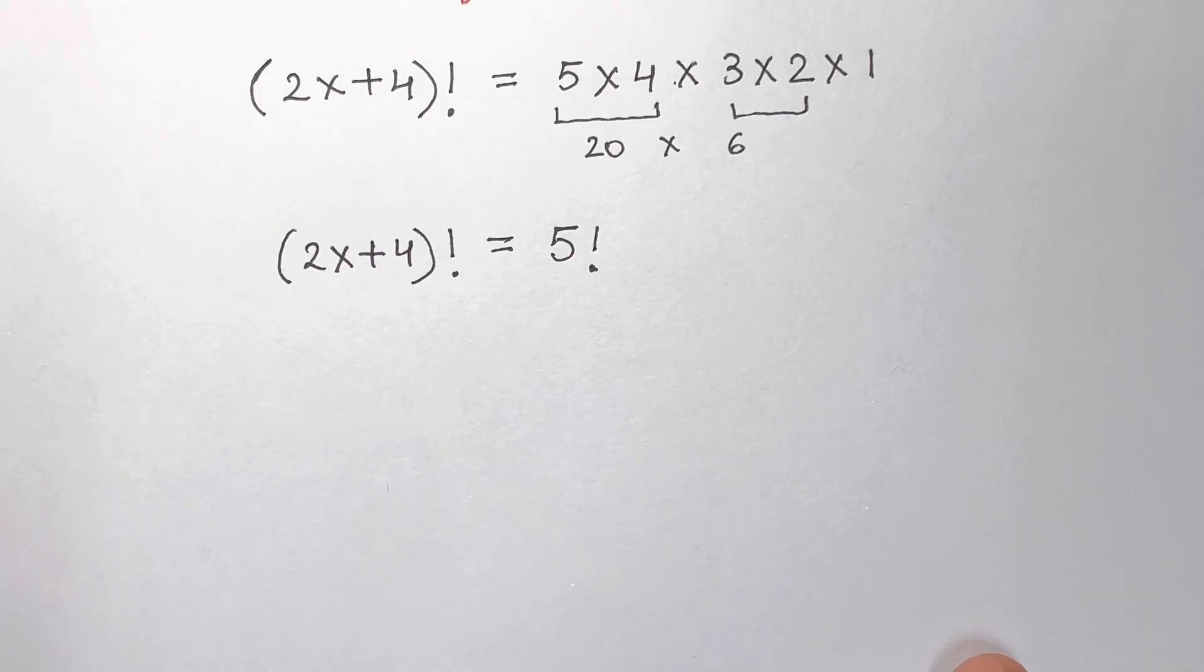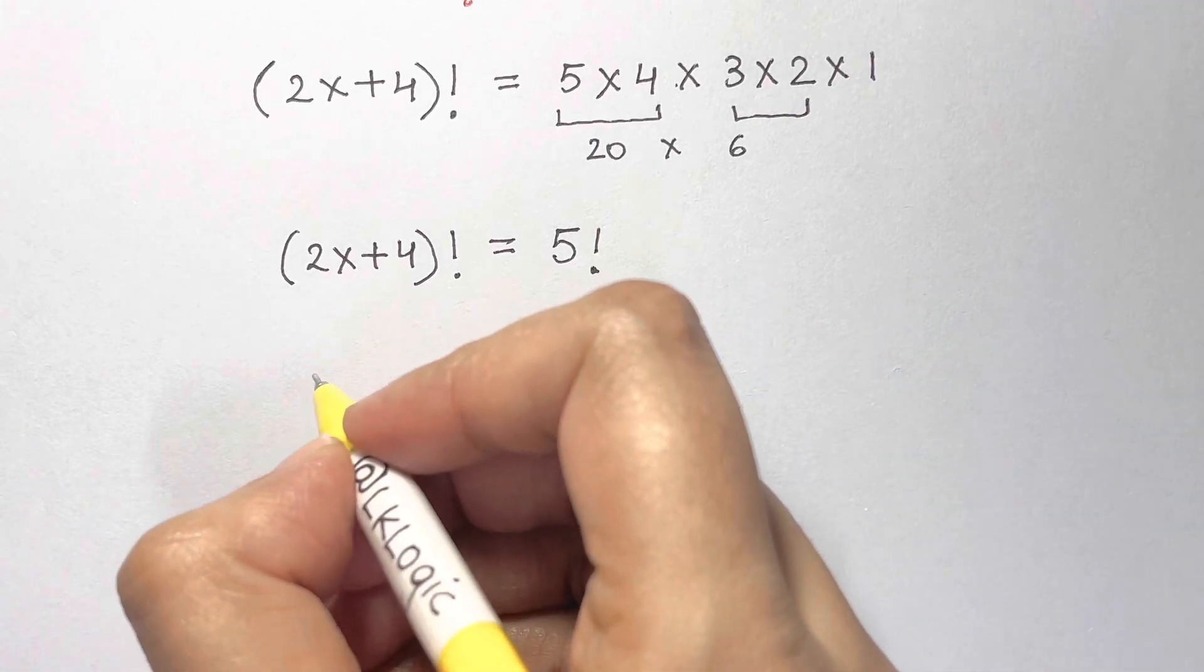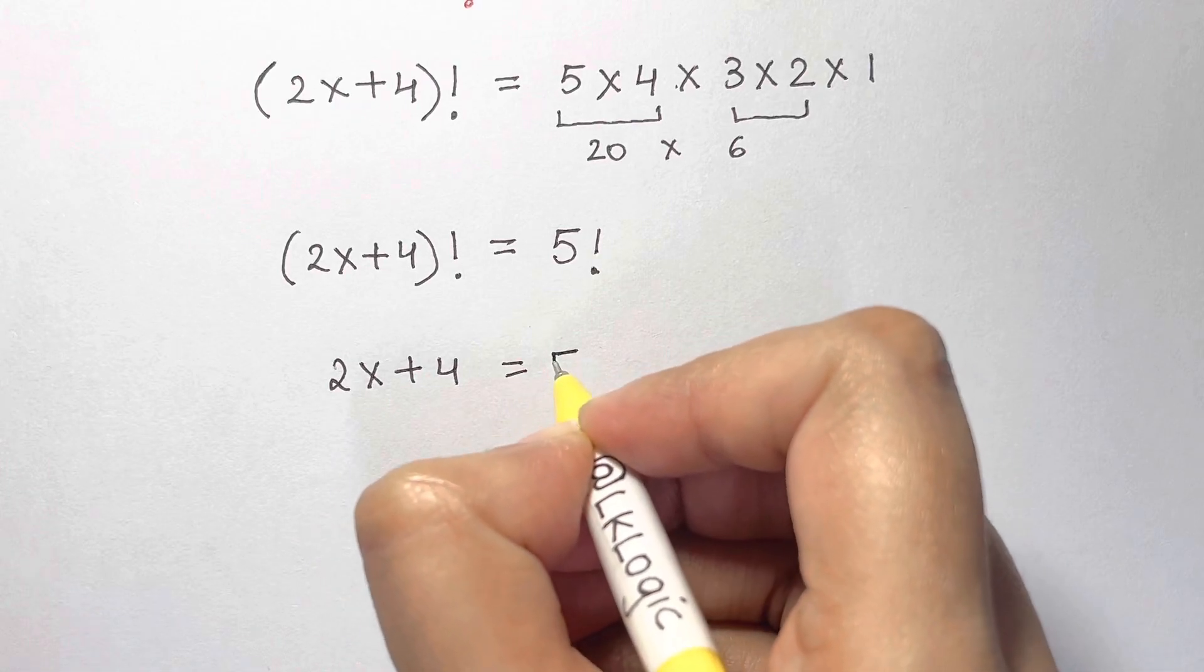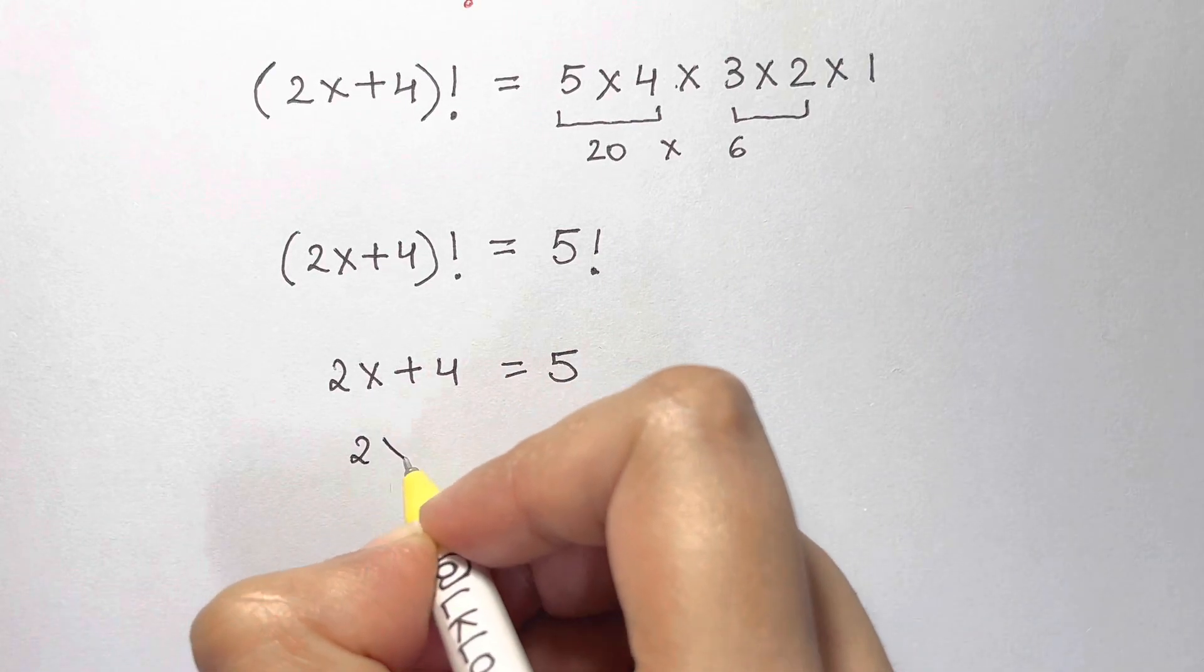Therefore we have 2x + 4 = 5, and 2x = 5 - 4.